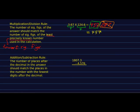Now, a lot of students get more mixed up with the addition and subtraction rule. The number of places after the decimal, places after the decimal, not sig figs. The number of places after the decimal in the answer should match the places in the number with the fewest digits after the decimal. So notice we're not talking about sig figs, we're talking about places after the decimal.